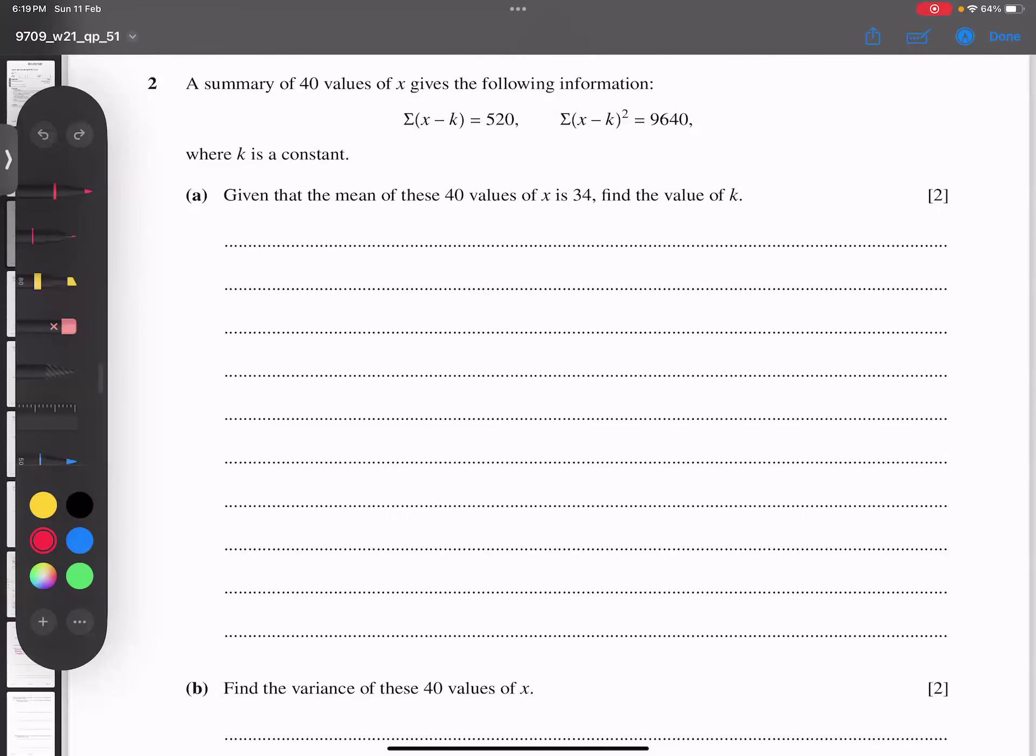Bismillah rahman rahim. In this video we have October 2021 variant 51, question number two. This is a coding method problem. Whenever we have this format, it's called coding method, and the best idea is to first write the formula.